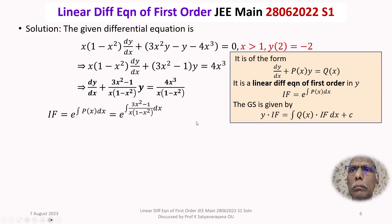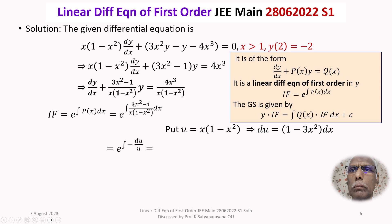To integrate, we substitute u = x - x³. Differentiating gives du = (1 - 3x²)dx, so 3x² - 1 gives -du. Thus the integral becomes ∫(-du) / [x(1 - x²)] = ∫(-du)/u, which gives -ln(u). So e^(-ln u) = 1/u. We have found the integrating factor as 1/u = 1/(x - x³).